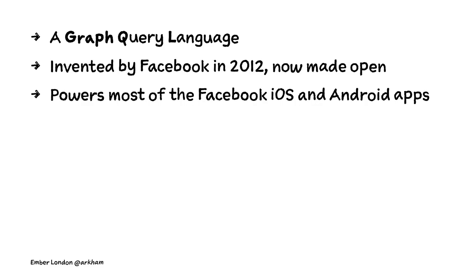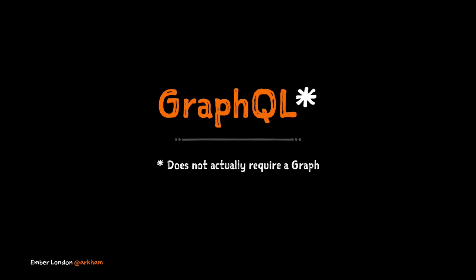Who knows what GraphQL is or has heard about it? GraphQL stands for Graph Query Language. It was invented by Facebook in 2012 and made open source. It powers most of the Facebook native apps. Despite the name, it doesn't actually require a graph — it's backend agnostic. You can use Postgres, an actual graph database, or even MongoDB.